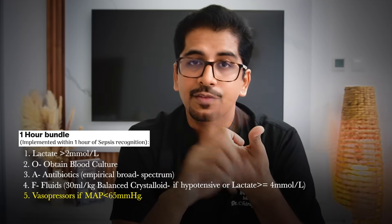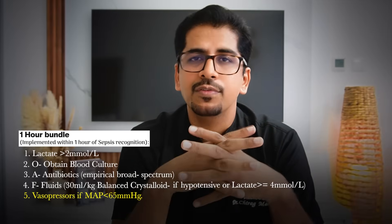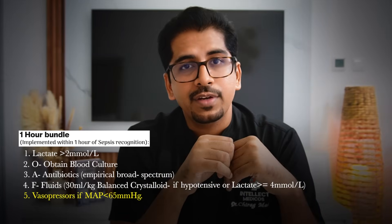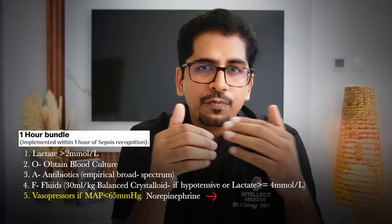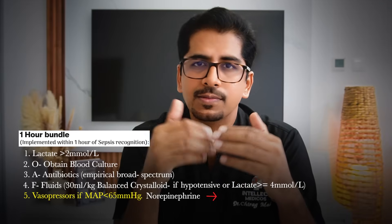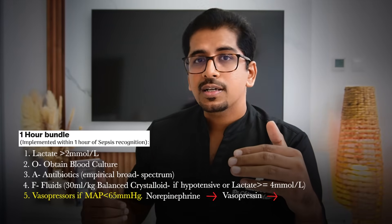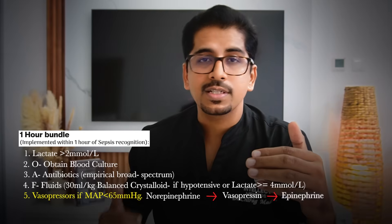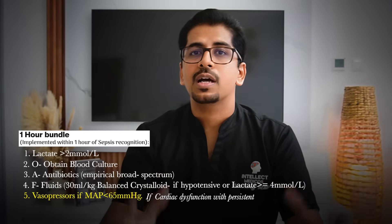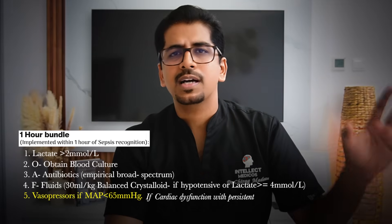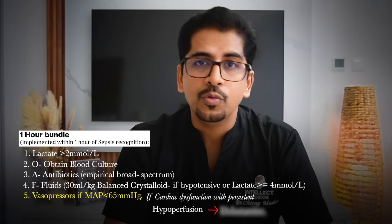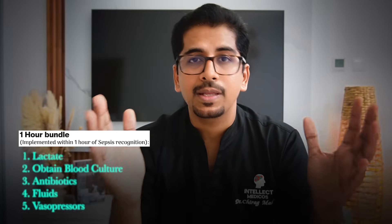The fifth element is vasopressors. If after fluid resuscitation you cannot maintain MAP at or above 65 mmHg, start vasopressors. The preferred first vasopressor in sepsis or septic shock is norepinephrine. If the dose of norepinephrine keeps increasing, add vasopressin as the second agent. If still unable to maintain MAP, epinephrine is third. If the patient also has cardiac dysfunction with persistent hypoperfusion, dobutamine can be added. All of this is per Surviving Sepsis Campaign guidelines.